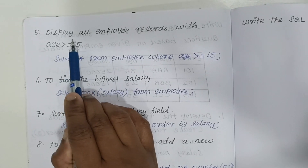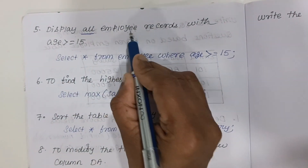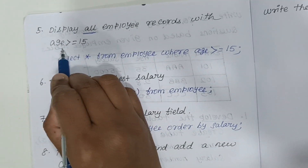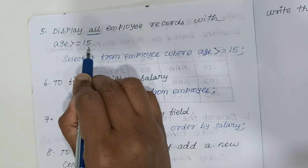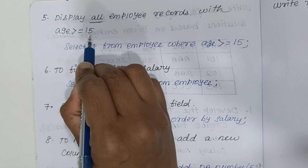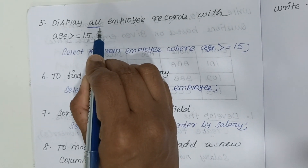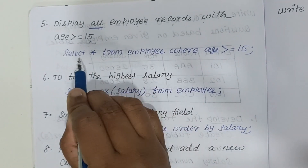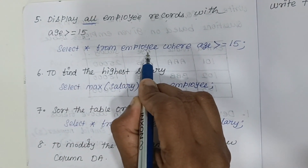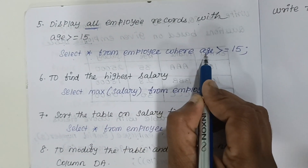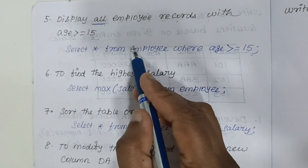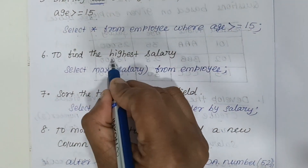Next question: display all employee records with age greater than 15. A condition is given — age should be greater than 15. Whenever the question says 'all', use SELECT * FROM employee WHERE age >= 15. The condition goes in the WHERE clause.